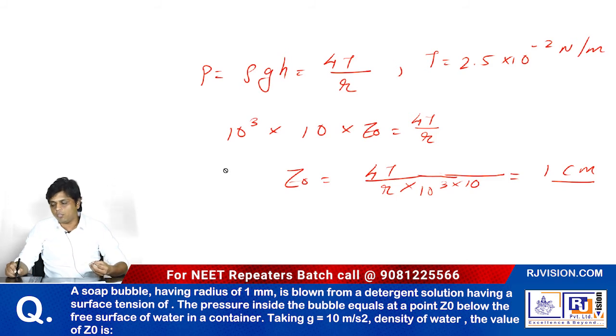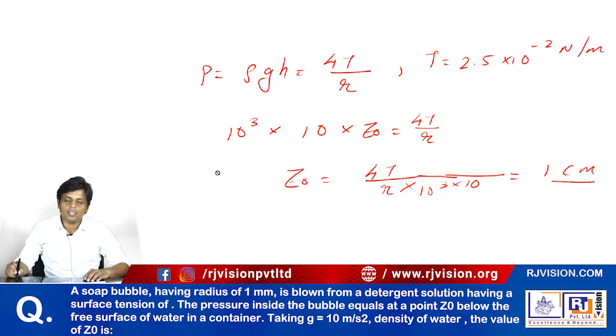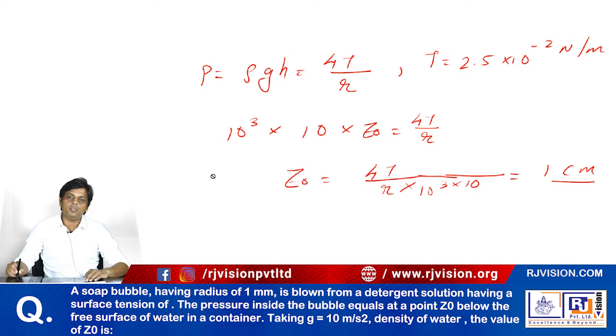After substituting all the given data, z₀ comes out to be one centimeter. So the depth z₀ is one centimeter.